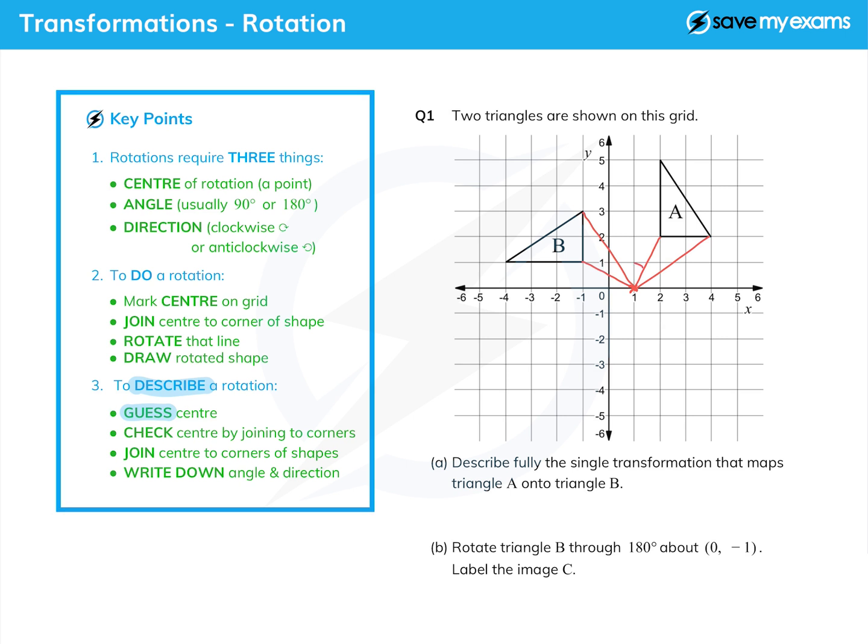How far is it rotated and in which direction? Well from A to B it's gone through that angle there in that direction, so that is 90 degrees anti-clockwise.